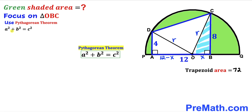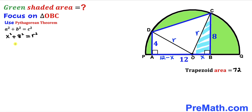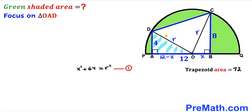Applying the Pythagorean theorem to right triangle OBC: x² + 8² = r², which gives us x² + 64 = r². We label this as Equation 1. Now we focus on the other right triangle OAD and apply the Pythagorean theorem again, where the hypotenuse is r and the two legs are (12 − x) and 4.